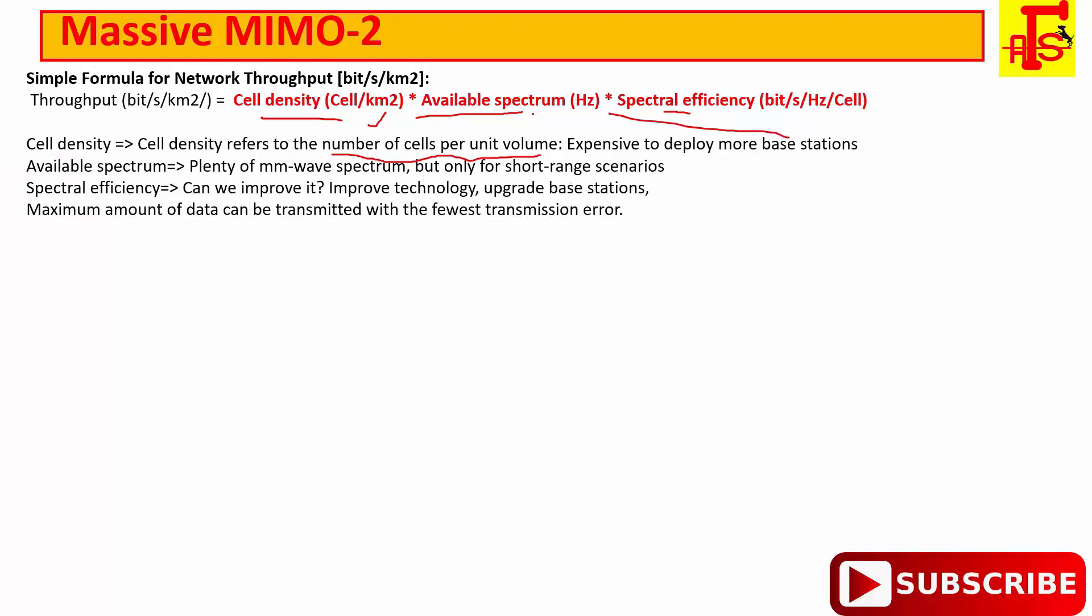Second is available spectrum. We can increase the frequency spectrum, increase the bandwidth that we are using. The problem is that the frequency that we are using today for cellular communication, we are using many hundred MHz for different types of cellular network and different applications like TV broadcasting. We use millimeter wave technology and it is a great technology for short range communication.